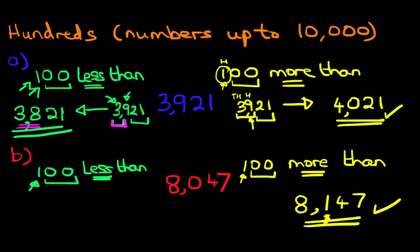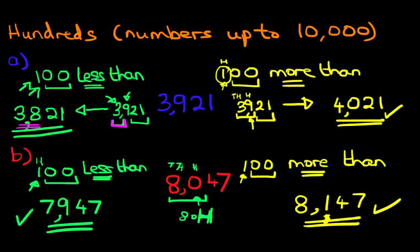Because this is a 0, what we're going to do is we're going to combine these two together. So, don't forget, this number here we can either say is 8,000 and 0 hundreds. Or we can say it is 80 hundreds. 80 hundreds. So therefore, 80 count back by 1. The answer is 79. And don't forget, the 4 and the 7 do not change. So 100 less than 8,047 is 7,947. And that is correct.